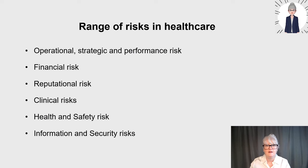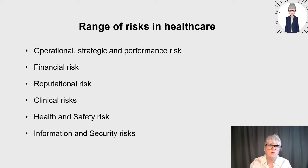In healthcare, we have a range of risks that include operational, strategic and performance risk. For example, a hospital or community trust's objectives might not be met, which could make services financially unsustainable — these are risks affecting delivery of national and local priorities set by NHS Improvement. We also have financial risk: organisations must keep within budget and generate income to survive. Financial risks are also linked to operational performance, so if you don't meet national targets your finances might be at risk, and there's also the risk of litigation when things go wrong and organisations are sued, which is very costly.